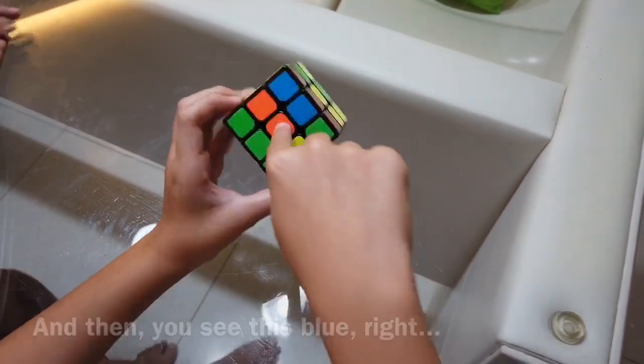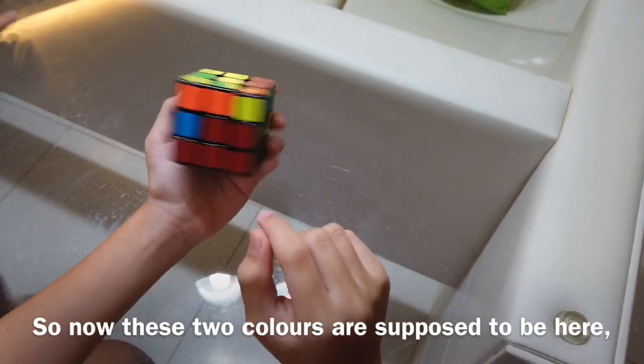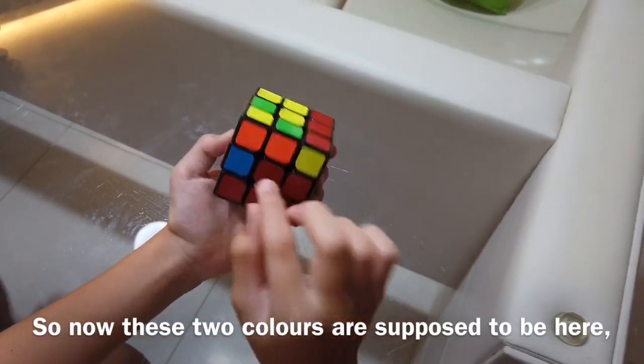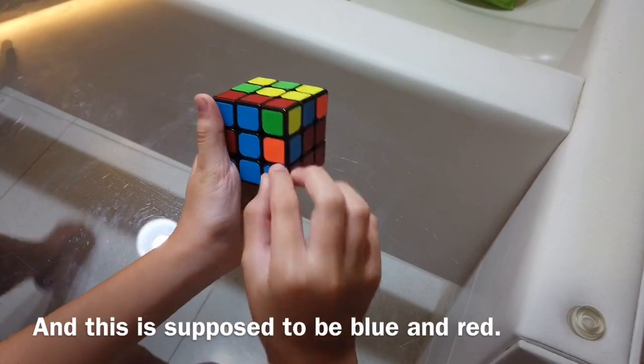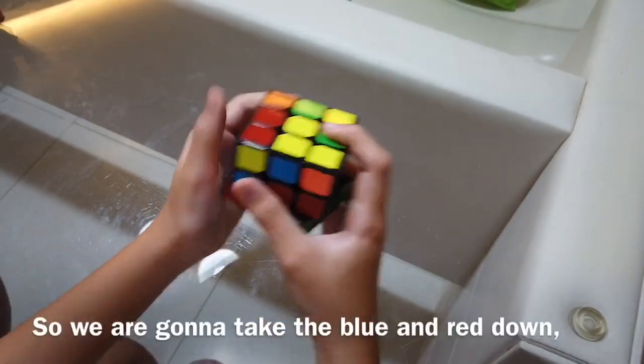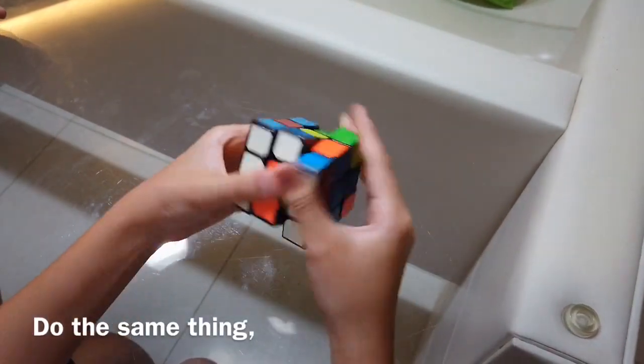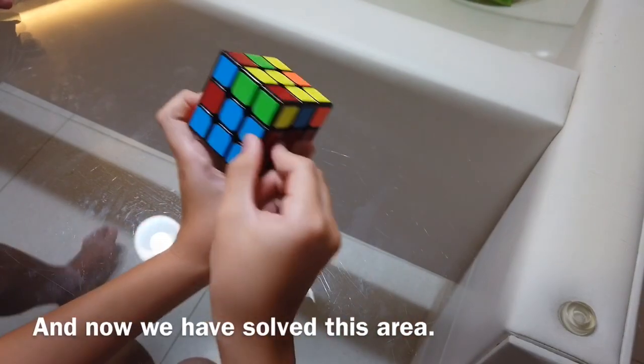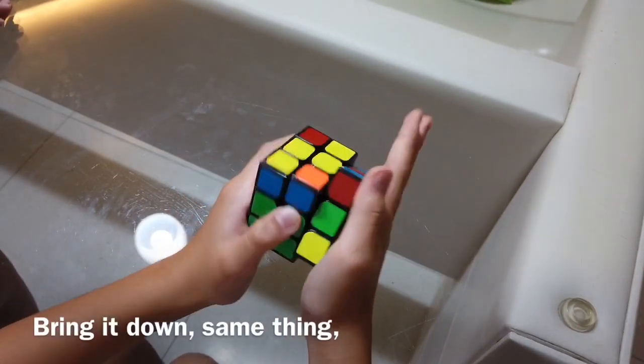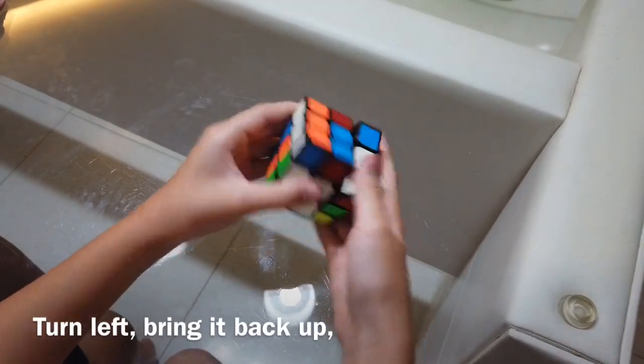And then, you see this blue, right? This orange. Just turn it one time. Amazing. These two colors are supposed to be here. And this is supposed to be blue and red. So we are going to take the blue and red down. Do the same thing. We are going to the red to the right. And bring it back up. And now we have solved the white, this area. This part. Bring it down. Same thing. Turn left. Bring it back up.